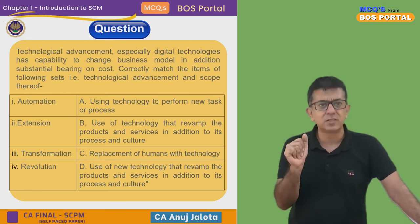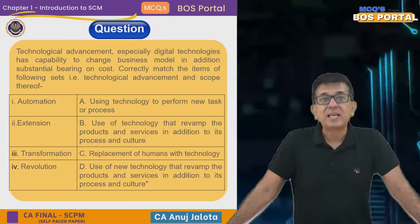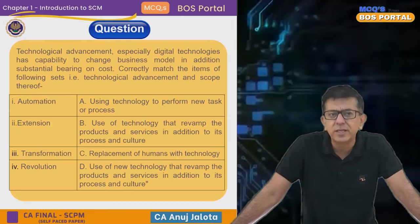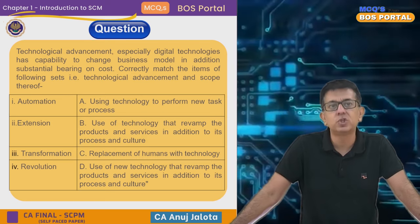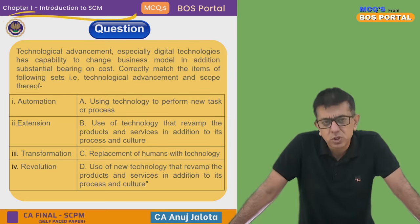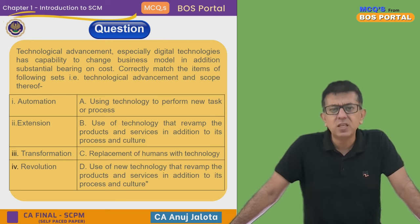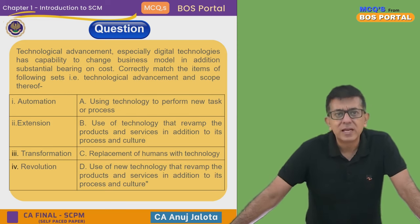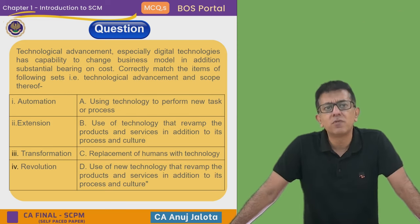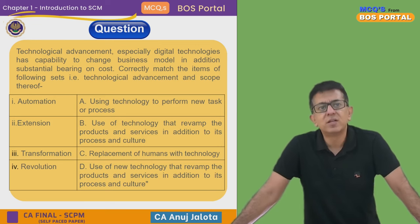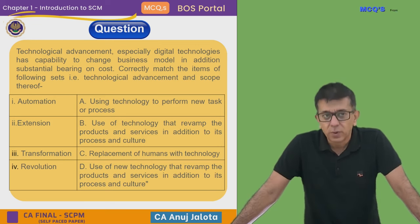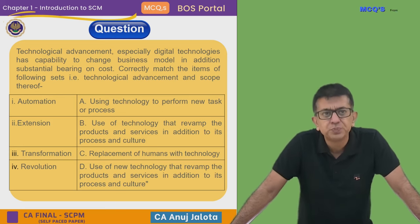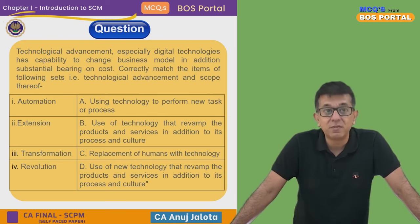Let's do this. 'Technological advancement, especially digital technologies, have the capability to change the business model; in addition, they have a substantial bearing on cost. Obviously any new technology might increase your cost in the short run.' Correctly match the items of the following sets — technological advancements and their scope. You have to match the following four things on the left with four things on the right: Automation, Extension, Transformation, and Revolution.